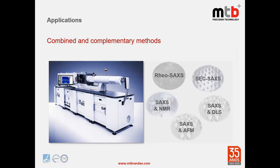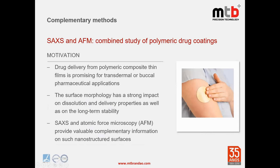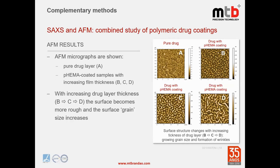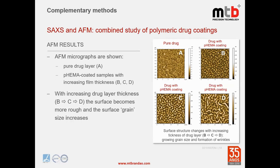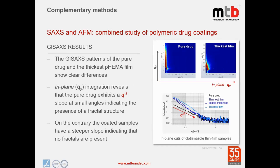One combination is SAXS and AFM for polymeric drug coatings — a biomedical application used to study drug delivery systems and understand adhesion. The AFM image of the sample and the GI-SAXS results were compared, showing clear differences in the drug film thickness and structure. This combination allows correlation between the two sets of results.